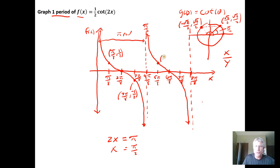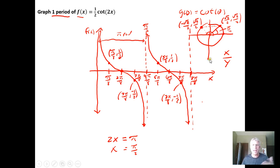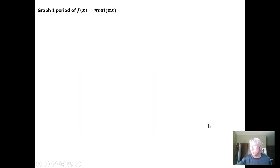For the second period, we label the key features: the point at x = 5π/8 gives an output of 1/2, and the ordered pair (7π/8, −1/2) is another key point. This gives us a graph of two periods, and you can replicate this pattern for however many periods of the cotangent function are needed.